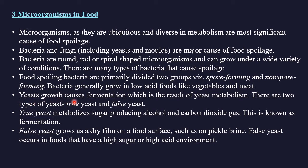Yeast growth causes fermentation, which is the result of yeast metabolism. There are two types: true yeast and false yeast. True yeast metabolizes sugar producing alcohol and carbon dioxide — simply fermentation. False yeast grows on a dry film on a food surface such as pickle brine, occurring in foods with high sugar or high acidic environments.